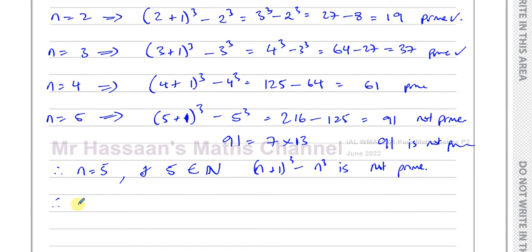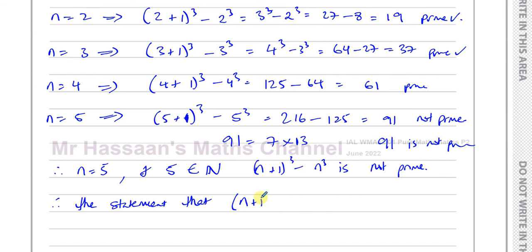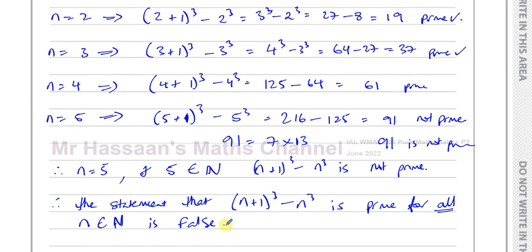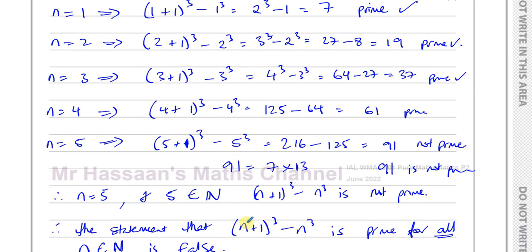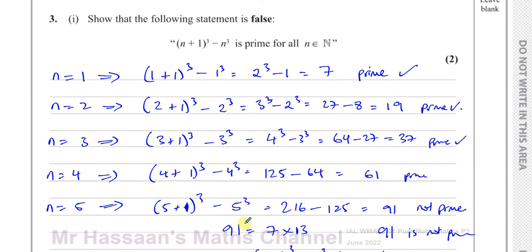Therefore, the statement that (n+1)³ minus n³ is prime for all n being an element of the natural numbers is false. We've proved that when n equals 5, this statement is not true because it doesn't give a prime number. And that's the answer to part 1 — a simple proof by counterexample.